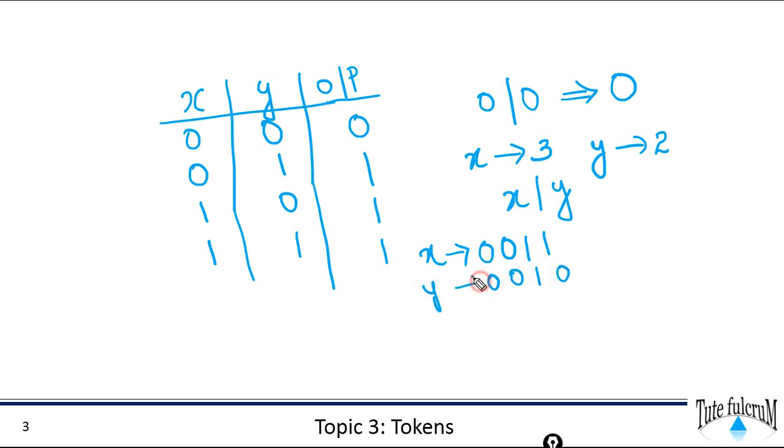So this is our y. So if we perform a bitwise OR operation between x and y each and every bit will be OR. So 1 OR with 0 output is 1. 1 OR with 1 it is 1. 0 OR with 0 is 0. So here also it is 0. So this is the output where we perform x that is 3 or with 2. So the output will be 3.